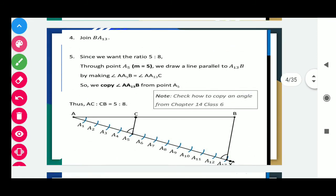After that, join B with A13. You have to join the last point with B. Since we want the ratio 5 ratio 8, in this way you have to make at the point A5 an angle.